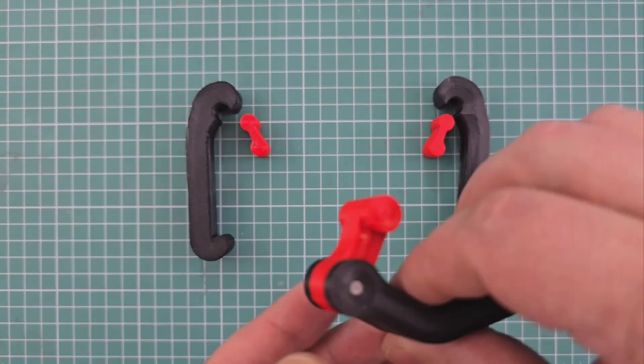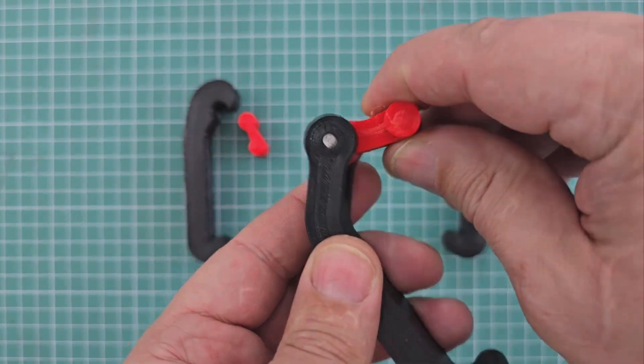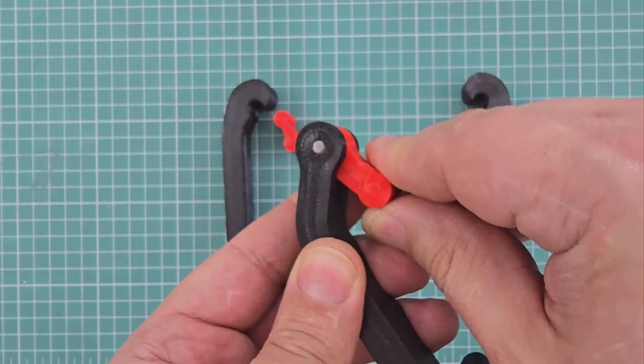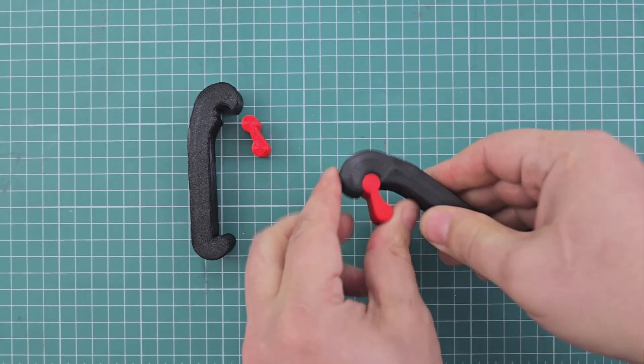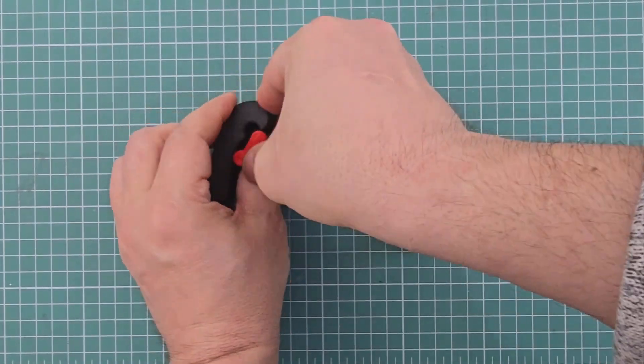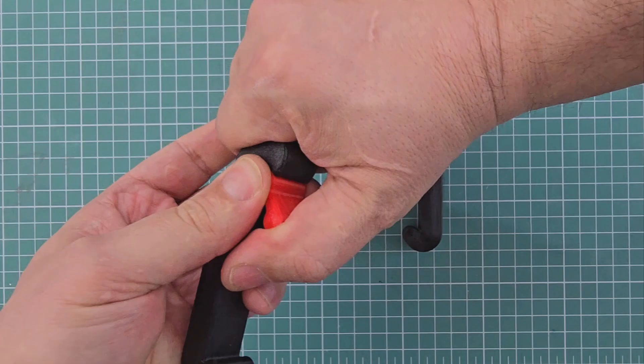For the second design I came up with this articulated arm but wasn't a big fan of the first version. It needed both a custom pin and printing supports, not ideal. So I replaced the axle articulation with a captive one. This eliminated both the custom pin and the need for printing supports.